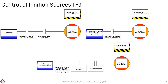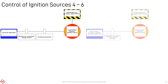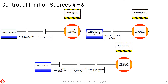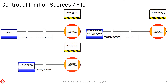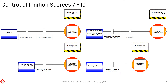Each ignition source will have its own controls, which typically involve components that are designed, constructed, installed, and maintained in accordance with relevant standards. Other controls may rely on the physical properties of the materials being processed. Containing the energy source or isolating it from the flammable atmosphere may also be an appropriate control.